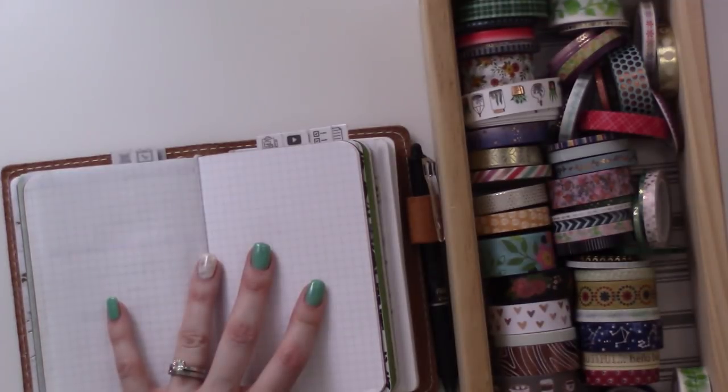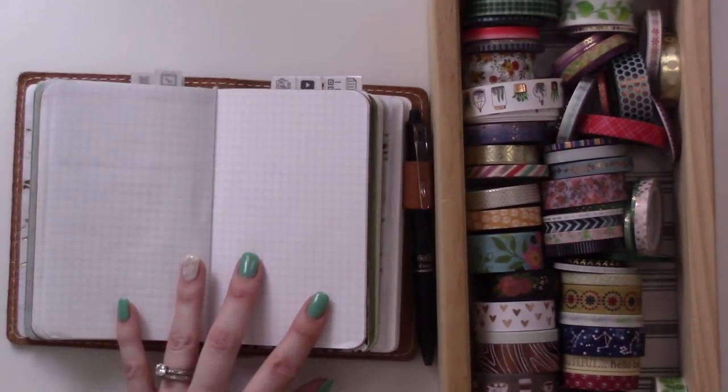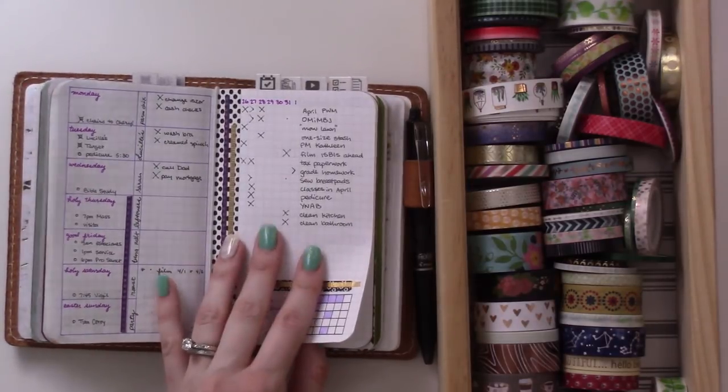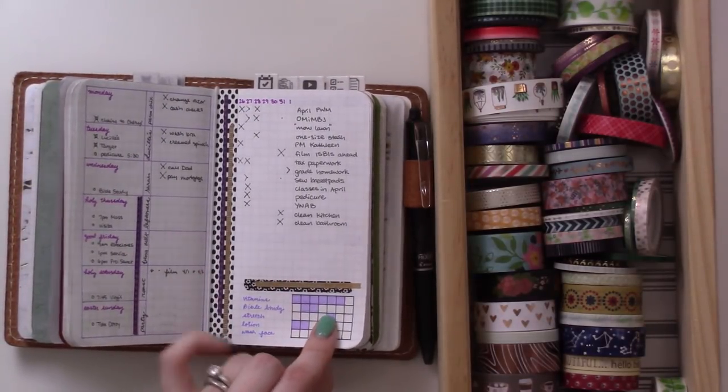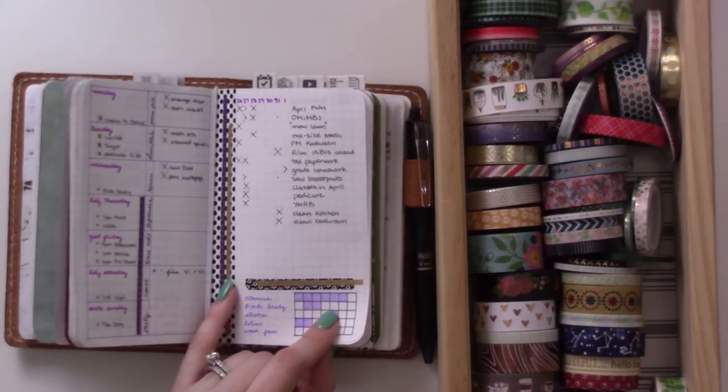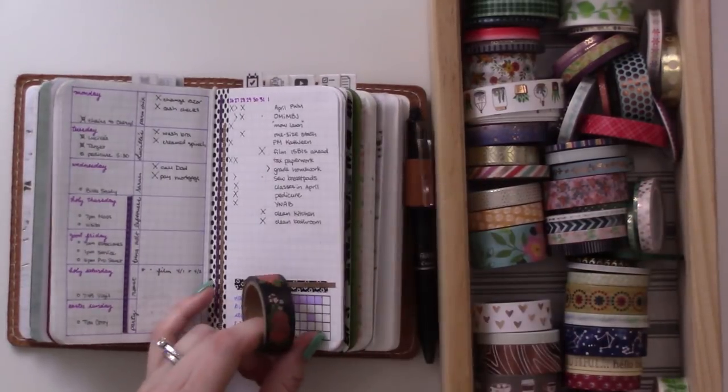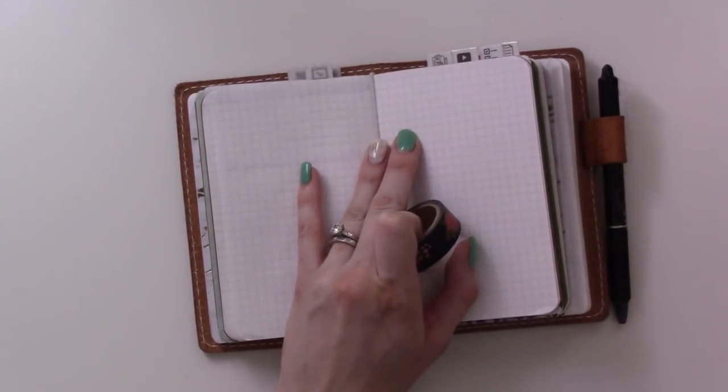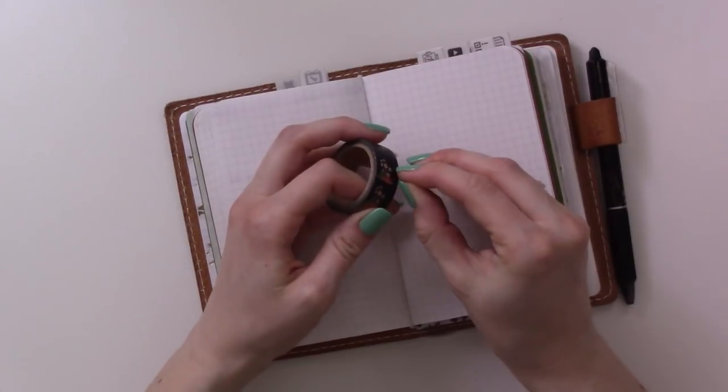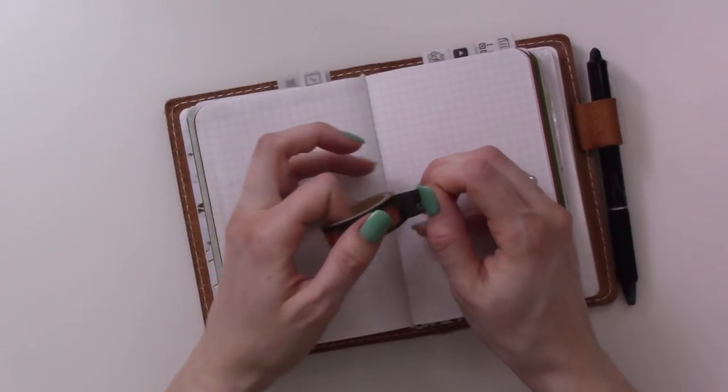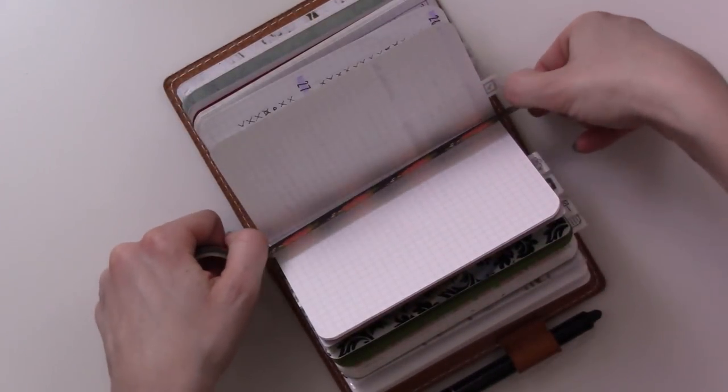Today's video I'm going to set up the weekly for April 2nd through 8th. We're going to start by picking out some washi tape. I think this has been working okay for me. Don't fix what isn't broken. I'm going to do the same kind of thing again. I just need to pick something to go along the edge, maybe this one. This one's fun, I don't use it enough.